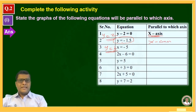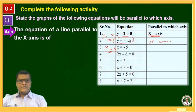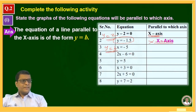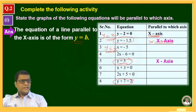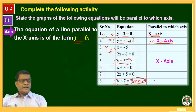Continuing the activity: simplifying another equation gives y = 7, but with -7 it becomes y = -5, which is again parallel to the x-axis. So the equations of the form y = b are all parallel to the x-axis.